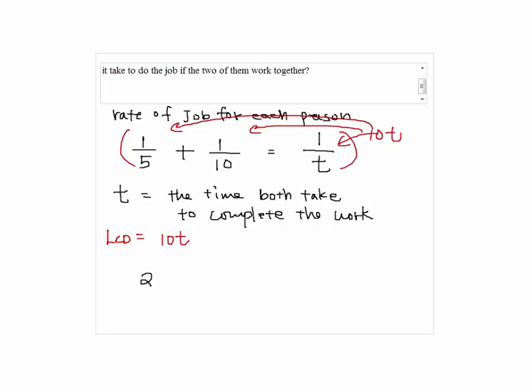So we have 2t plus t equals 10. That will give us 3t equals 10. So t equals ten-thirds hours, or you can write this as three and one-third hours.